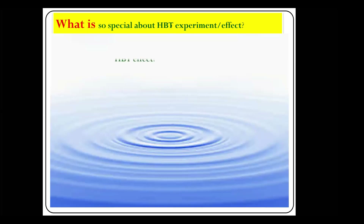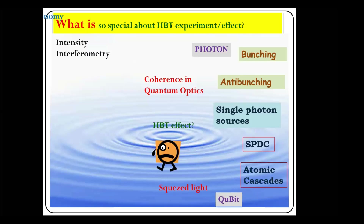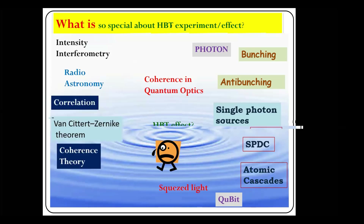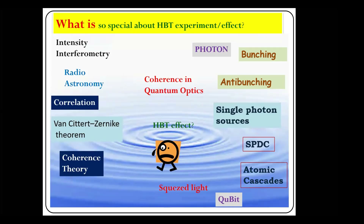It was like throwing pebbles. These are a few words I think a student should think about for a while: What are photons? What is bunching? What is anti-bunching? What are single photon sources? What is spontaneous parametric down-conversion? What are atomic cascades? What is squeezed light? Qubit. Intensity interferometer. Radio astronomy. Correlation. Coherence theory. These are random words for now — gradually, if you ponder over them, you would start finding a rhythm between them. With this, I say thank you to all.